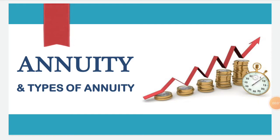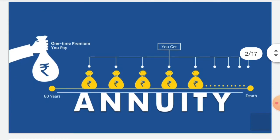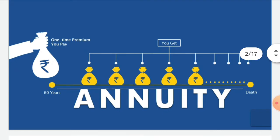I will be explaining annuity and different types of annuity. Here is a picture depicting the term. You have to pay a premium one time, which may be in lump sum or which may be paid periodically, and then you will receive the benefits of it in the upcoming years.